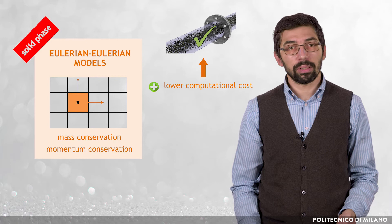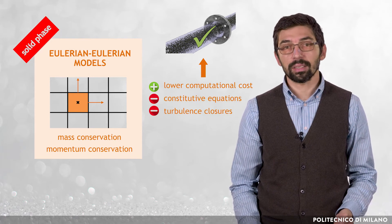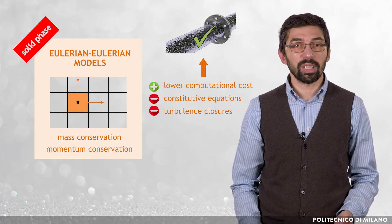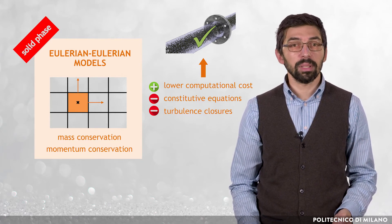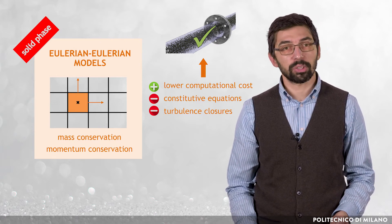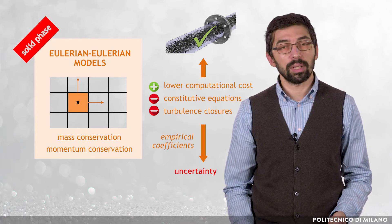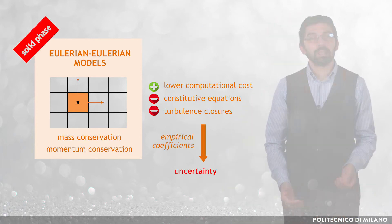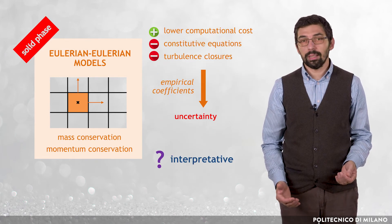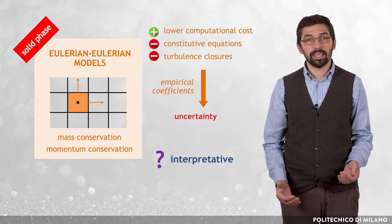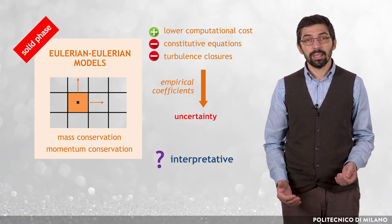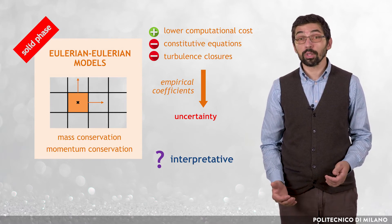However, Eulerian-Eulerian models suffer from their dependence on constitutive equations for the solid phase and on closures for the turbulence correlations, which typically include empirical coefficients calibrated with respect to laboratory experiments, creating uncertainty in the numerical predictions. As a result, many Eulerian-Eulerian models appear to have an interpretative value, in the sense that, once they have been calibrated against a given set of experiments, they allow deepening insight into the characteristics of those flow conditions.